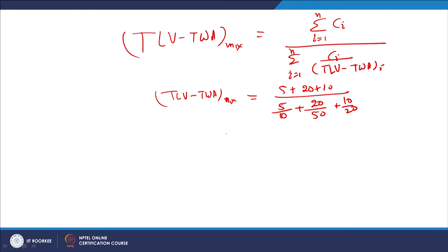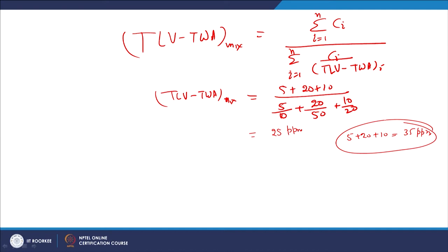The TLV-TWA of the mixture comes out to be 25 ppm. However, the total measured concentration is 5 + 20 + 10 = 35 ppm, which is higher than 25 ppm. Therefore, based on this, the workers are overexposed to the mixture.